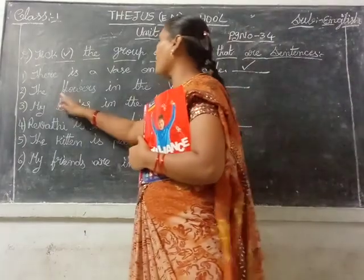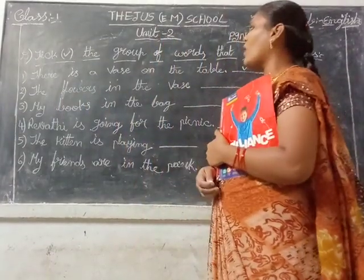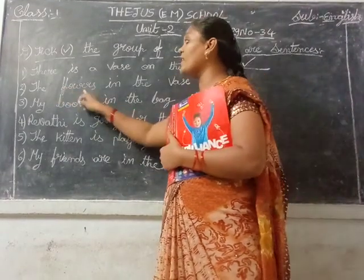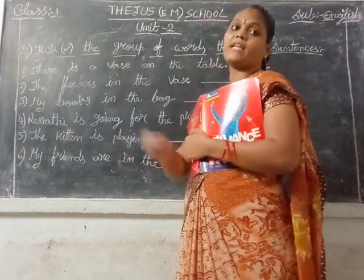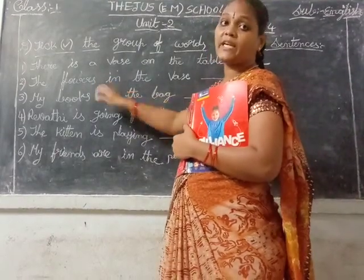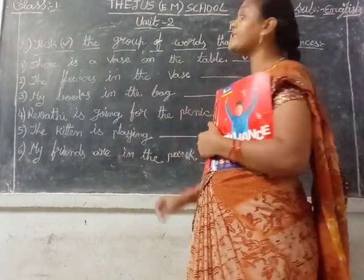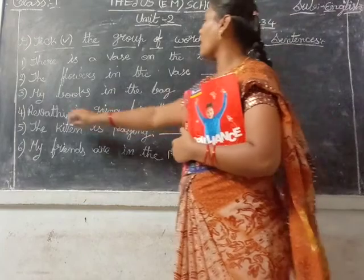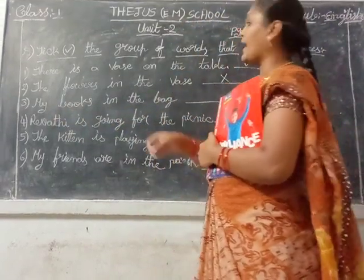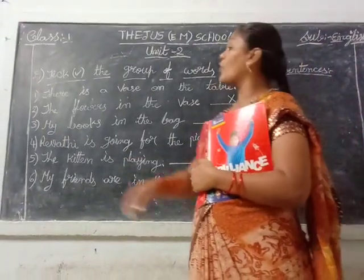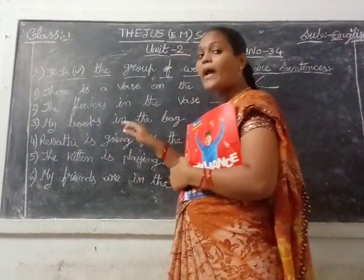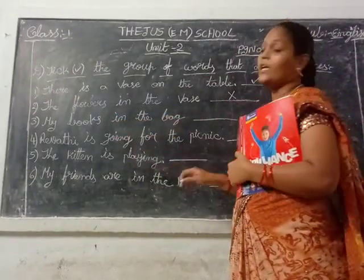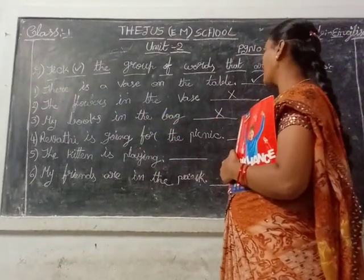Next: 'The flowers in the vase.' What is that? The flowers in the vase — is that correct? No. The correct sentence is: the flowers are in the vase. Here 'are' is missing, so that is not a correct sentence. You put wrong here. Next: 'My books in the bag.' That is not correct, children. My books are in the bag — here 'are' is missing.